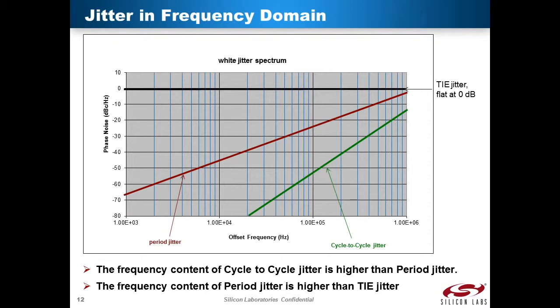Similarly, period jitter's profile also has more high frequency content because it includes adjacent cycles as well as all others in the sampling period.